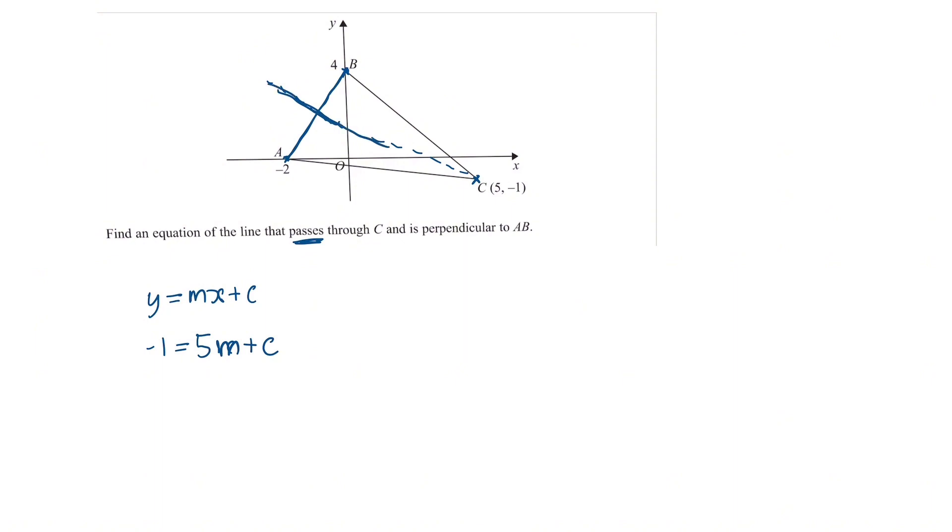So how do we find the gradient of AB? So the coordinates of a is minus 2, 0 and the coordinates of b is 0, 4. So the gradient is given by changing y which is 4 take away 0 divided by changing x which is 0 minus negative 2. So these two minuses will combine to make a plus. So we have 4 divided by 2. So the gradient of this straight line AB is just 2.